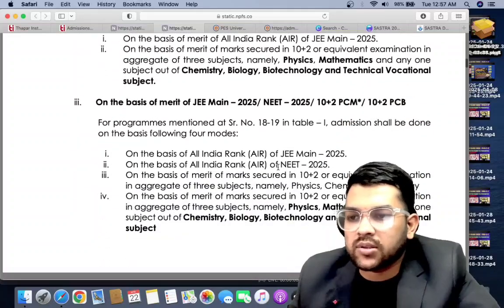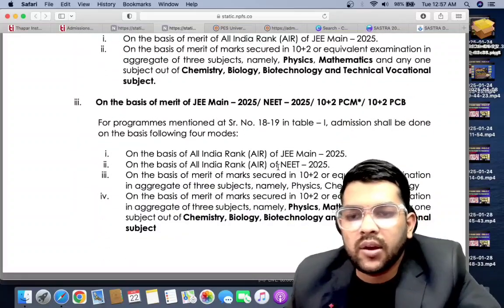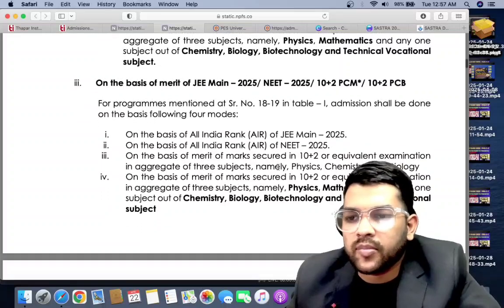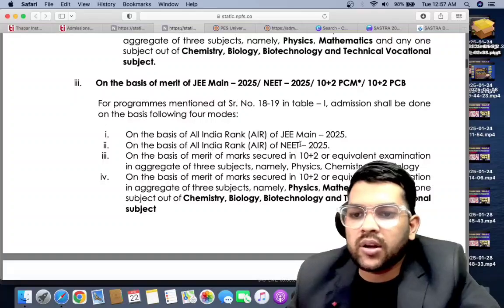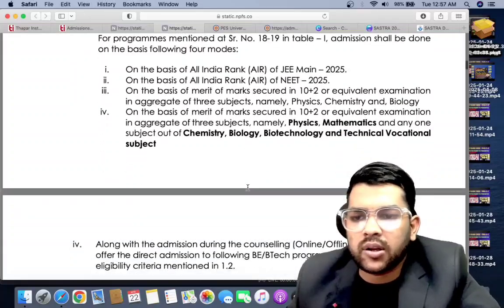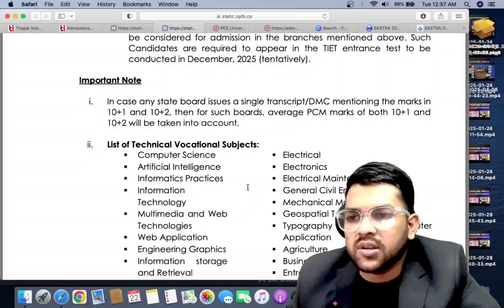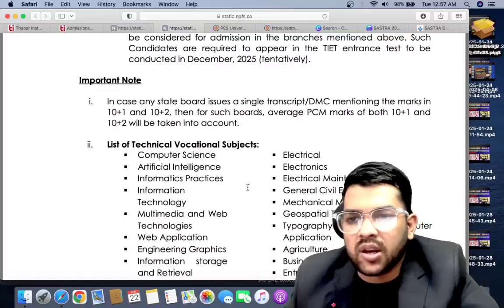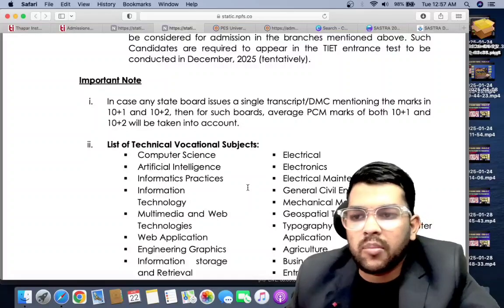If you have 95 like this, then you are going to get this college with very good branch. If you are from other state, home state you can get at 80 or 70 percent also. You can check on the basis of All India Rank JEE Mains. On the basis of All India Rank, NEET - that is bio-related courses they will provide.